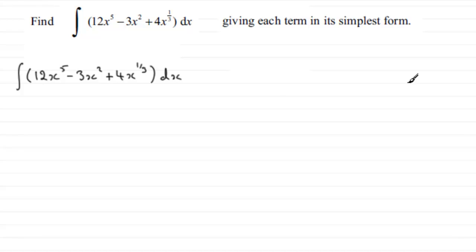Each of these terms has the form ax to the power n. When we integrate terms like this, it's very simple: we add 1 to the power to get n plus 1, and divide by the new power n plus 1. This is something you should be familiar with.